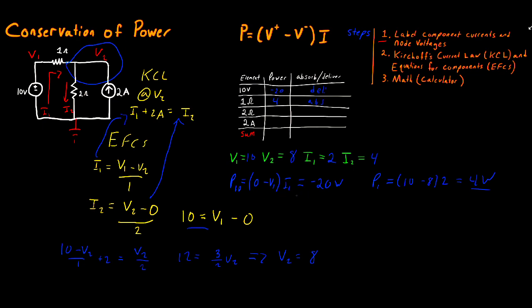Moving on to the 2 ohm resistor: that is V2 minus 0, multiplied by I2 — which is 8 times 4, giving us 32 watts. So this is 32 watts, absorbed.